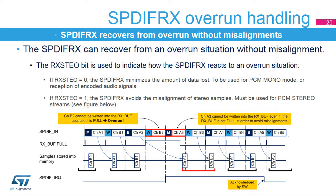The SPDIF-RX can recover from an overrun situation without misalignment. The Rx-STEO bit indicates how the SPDIF-RX reacts to an overrun situation. If Rx-STEO equals 0, the SPDIF-RX can minimize the amount of data lost, to be used for PCM mono mode or reception of encoded audio signals. If Rx-STEO equals 1, the SPDIF-RX can avoid the misalignment of stereo samples — must be used for PCM stereo streams.